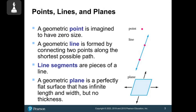A geometric point is imagined to have zero size, basically meaning it has no dimension — it's literally just showing us a location. A geometric line is formed by connecting two points along the shortest path possible, so it will be straight, going through and extending in both directions.